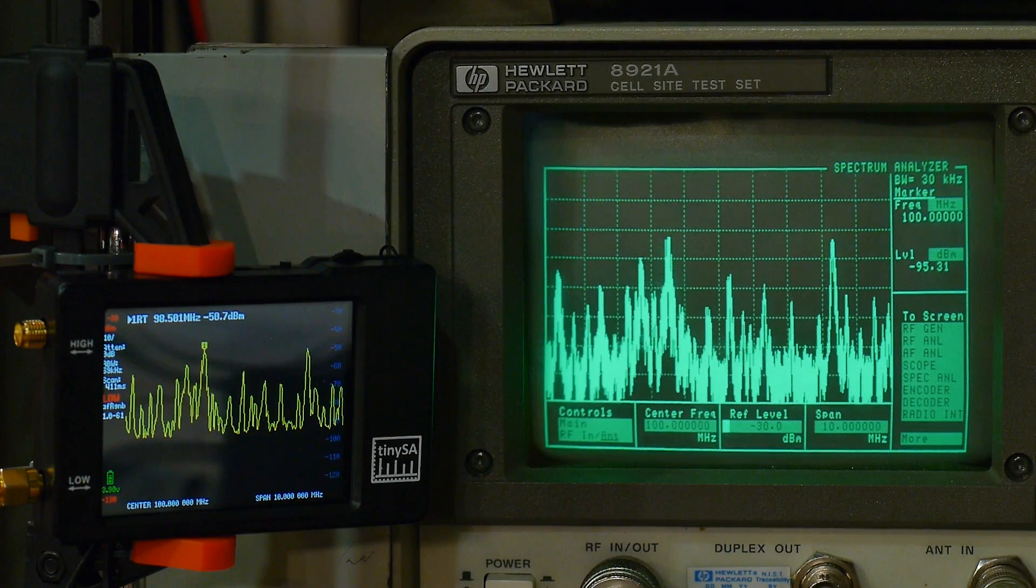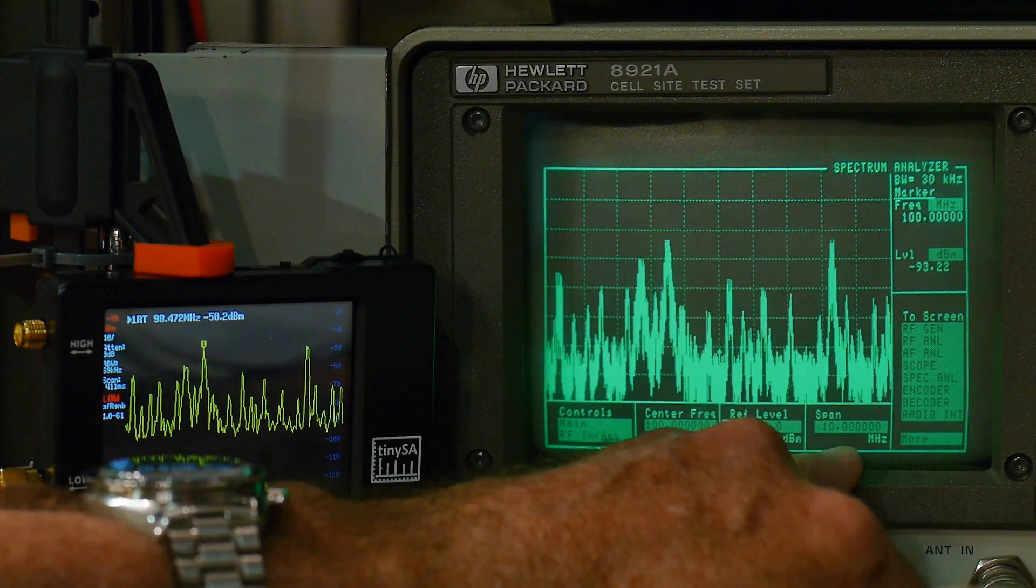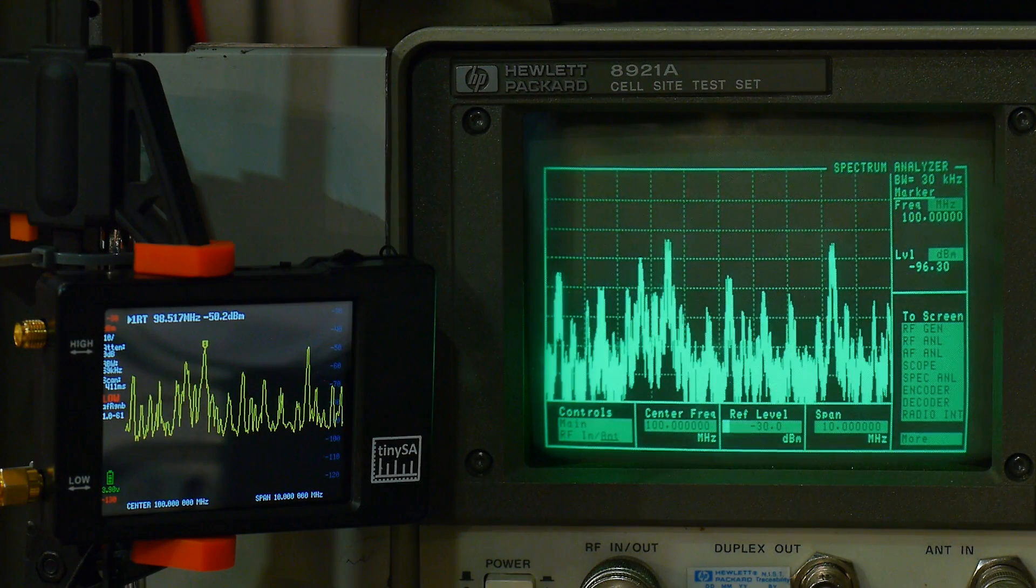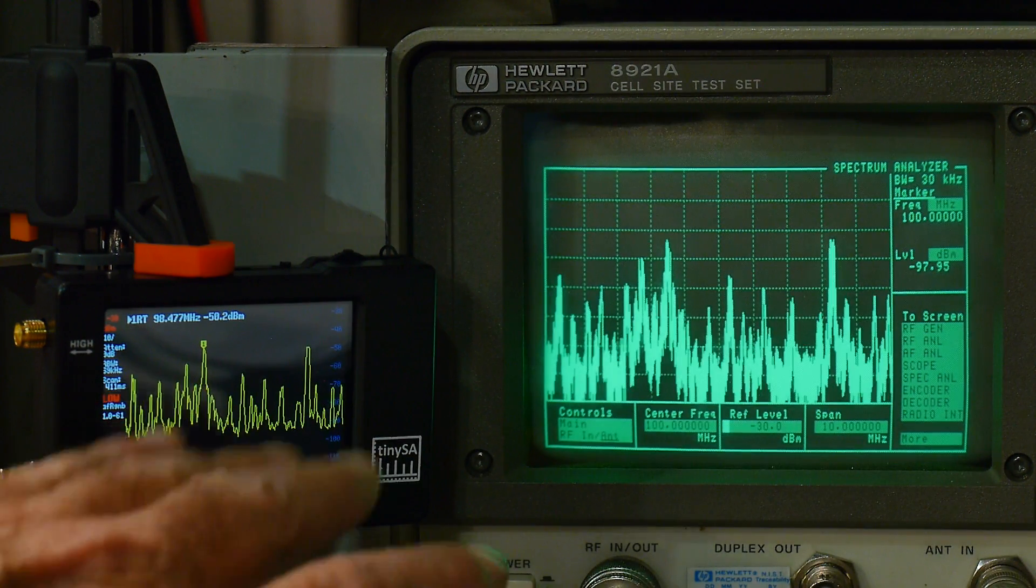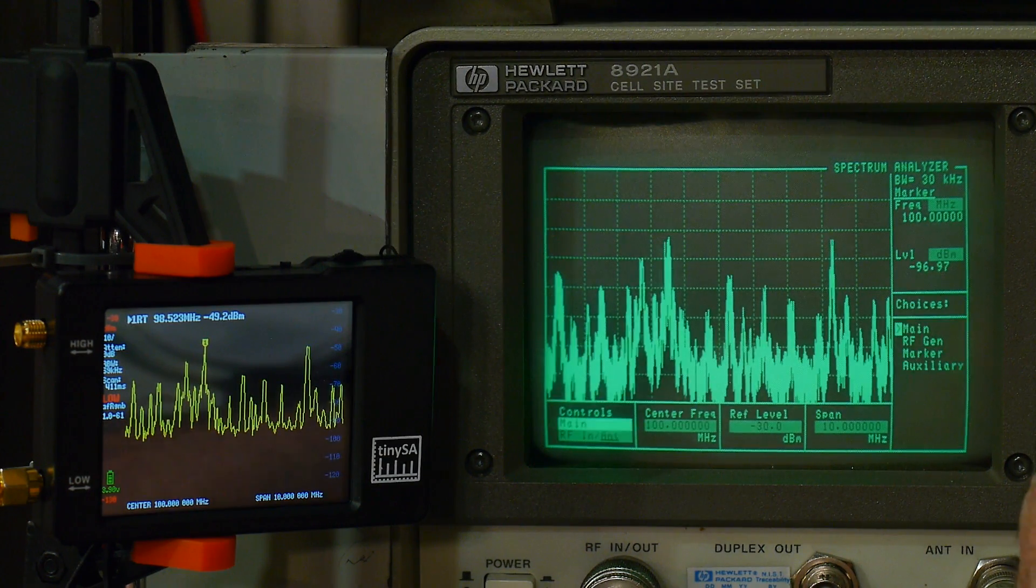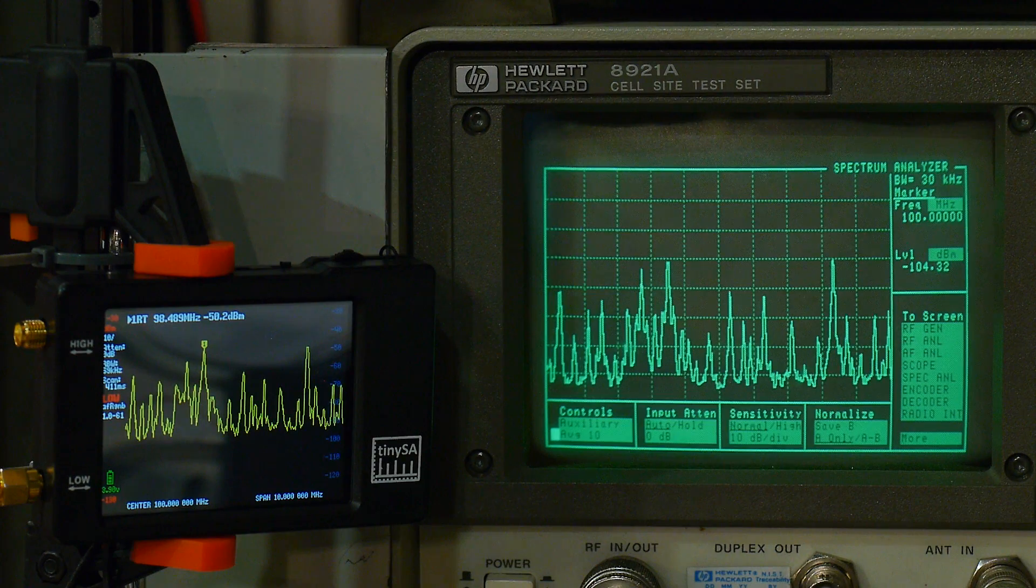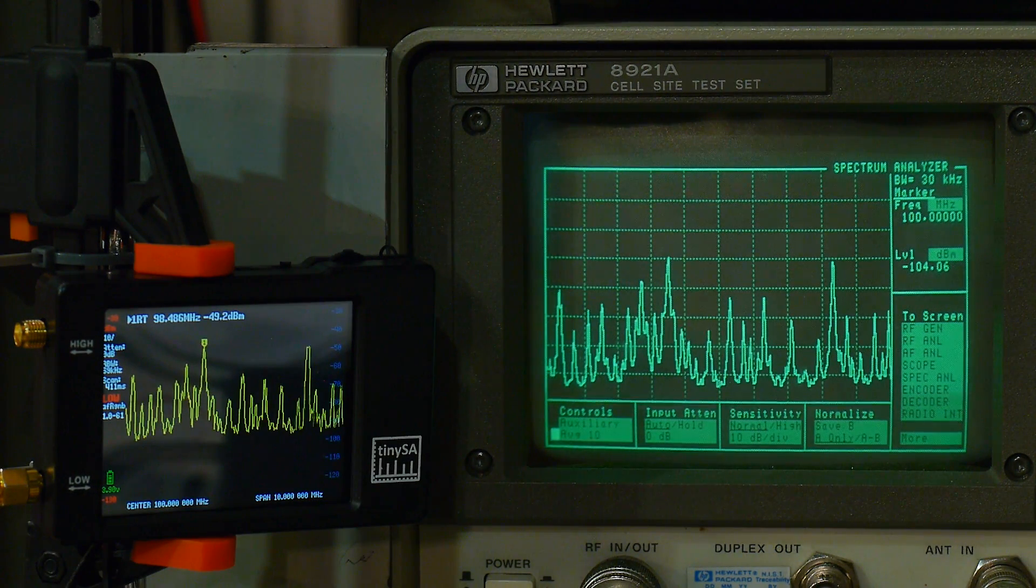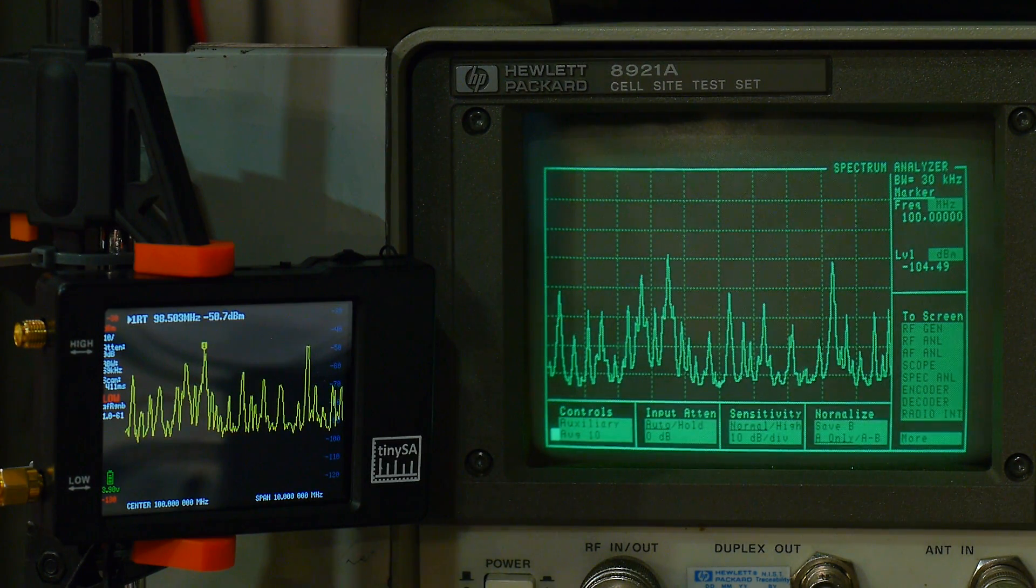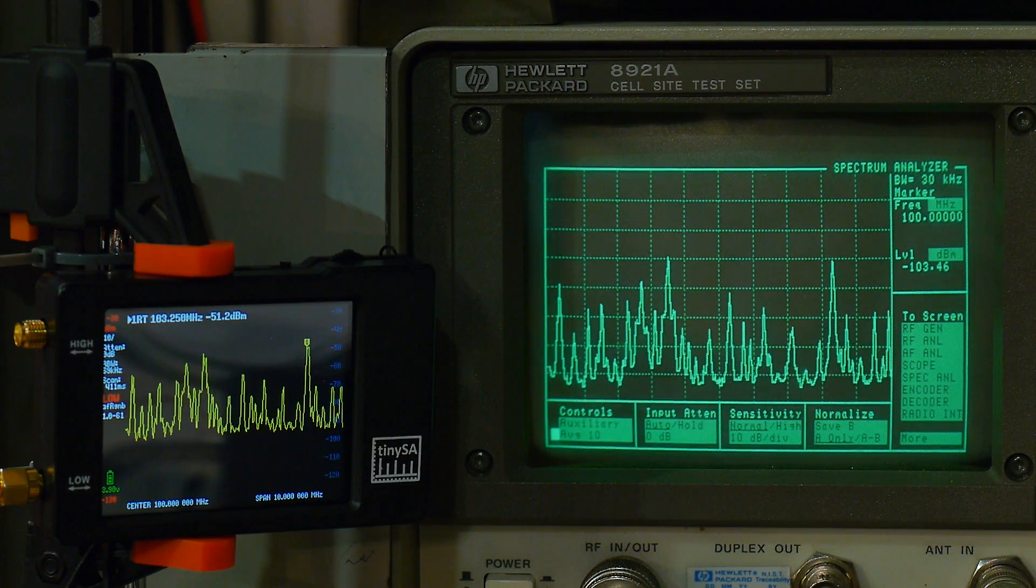For the next test I've hooked up an external antenna so we're looking at the FM band on both. We've centered at 100 megahertz with span of 10 megahertz on both and reference level set to minus 30 dBm. This one seems to have more dynamic range, this one seems to have a kind of a solid noise floor. Another thing we can do on the 8921 is add averaging, 10 readings. You can see they're starting to look more similar when I add averaging. They are fairly comparable in that respect.